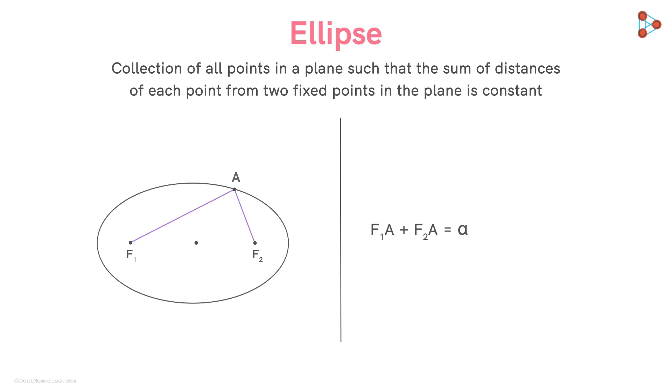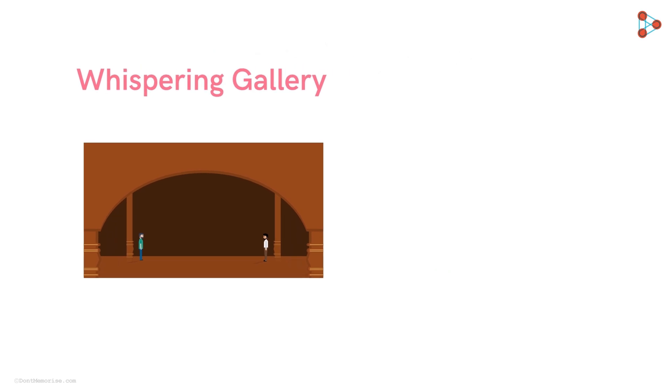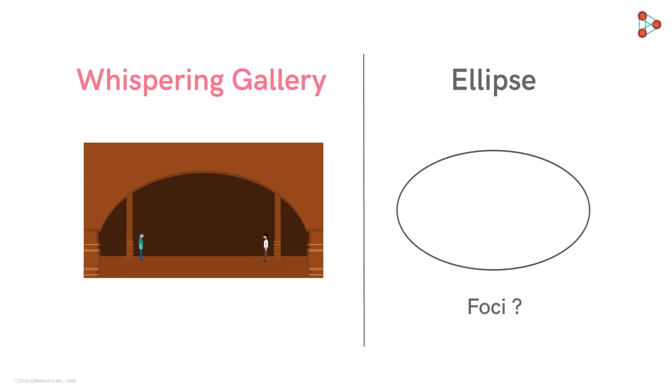Now many of you may have a question from our example of the whispering gallery. Suppose you and your friends are in a whispering gallery with an elliptical shape ceiling. How will you know where to stand to hear the whispers of each other? That is where the foci of the elliptical ceiling are.